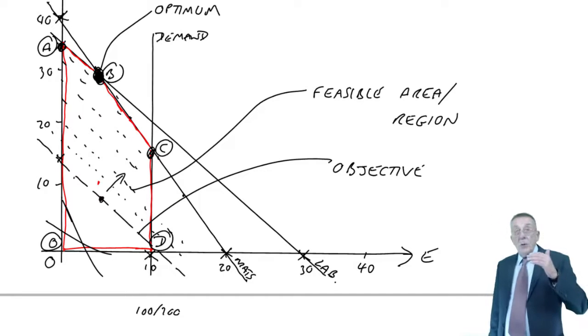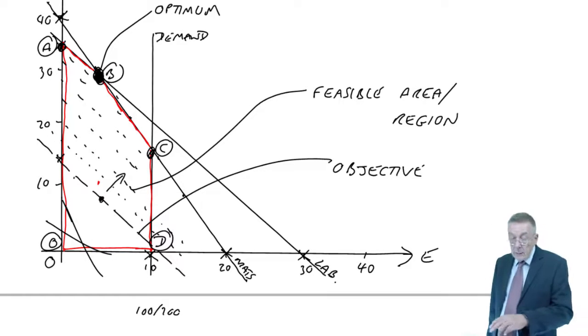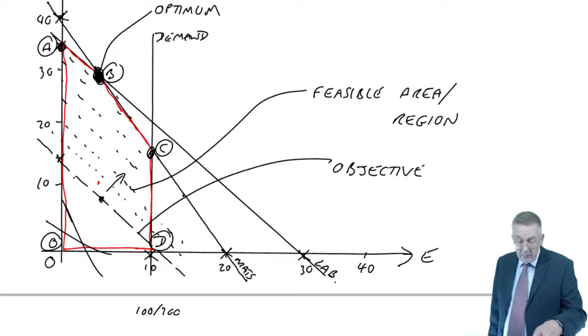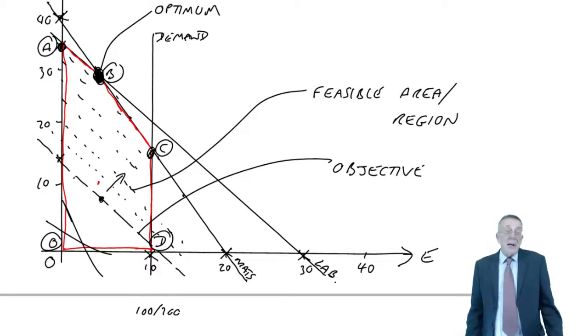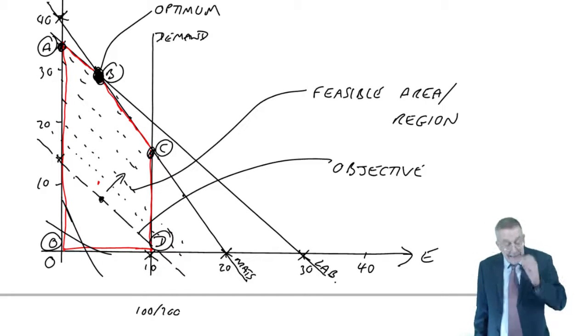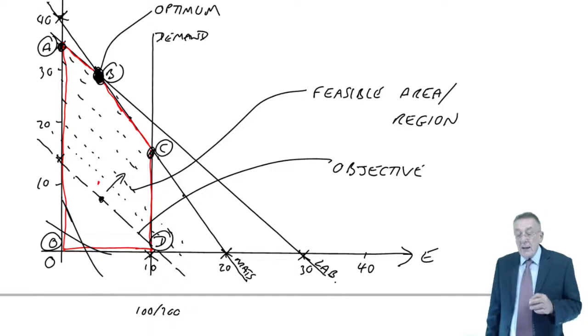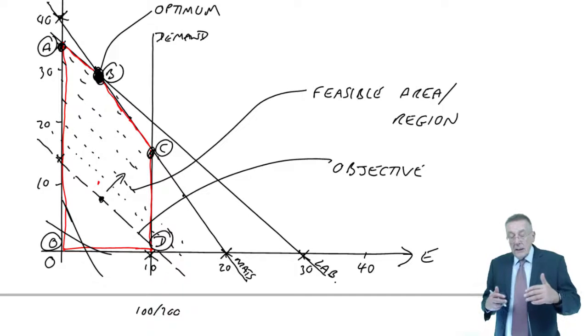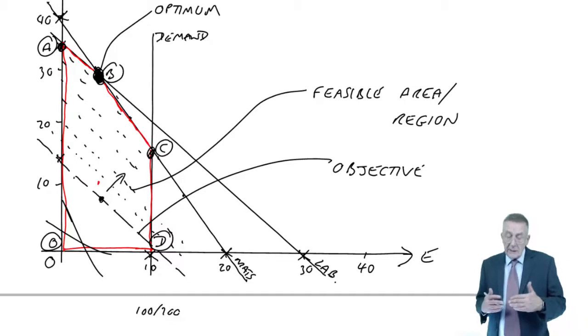Work out what it would be at point A. At point A you're making 0Es and 30 something S's. At point C you're making 10Es and I'm not sure how many S's. By all means. But it takes longer. And again, you could be specifically tested on knowing this idea of moving up the objective function.